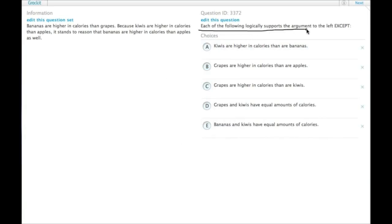Each of the following logically supports the argument to the left, except what? From the argument we have bananas are higher in grapes than calories, and we also know that kiwis are higher in calories than apples, and therefore it stands to reason that bananas are higher in calories than apples as well.